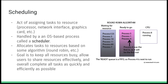Scheduling is broadly the act of assigning tasks to resources such as processors, network interfaces, and graphics cards — determining the order and timing of task execution. This scheduling function is conducted by the operating system, using some algorithm to determine how to schedule tasks. The goal of the scheduler is to keep all resources busy, allow users to share resources effectively, and complete computer tasks as quickly and efficiently as possible — essentially optimizing CPU operations.